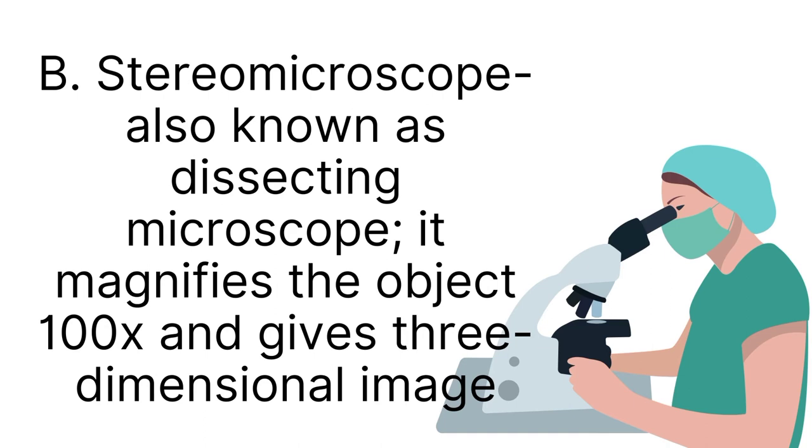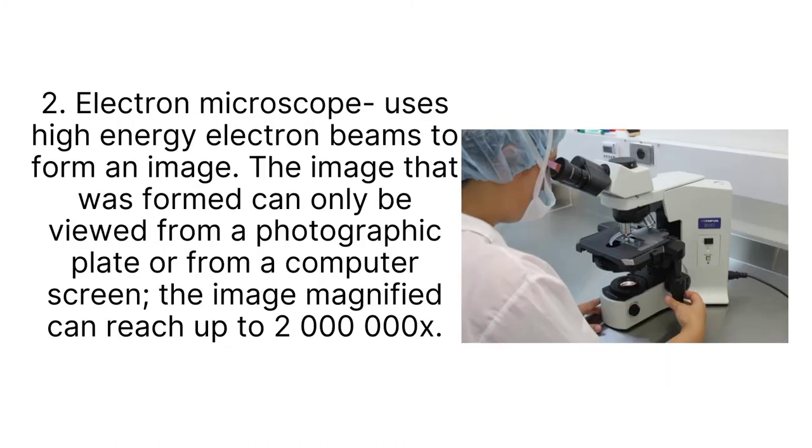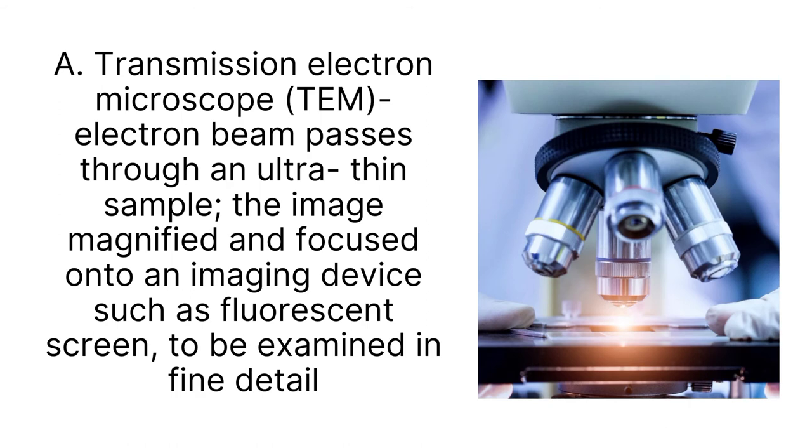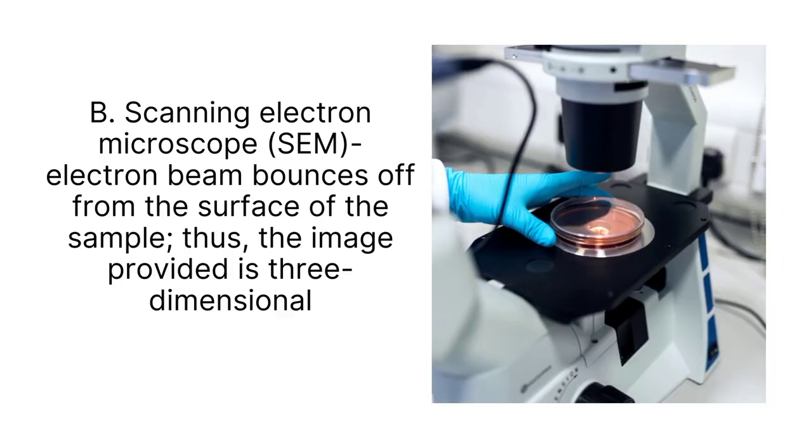Electron microscope uses high-energy electron beams to form an image. The image that was formed can only be viewed from a photographic plate or form of computer screen. The image magnified can reach up to 2 million times. There are two classifications of electron microscope. First is transmission electron microscope. The beam passes through the ultra-thin sample. The image magnified and focused into an image device such as fluorescent screen to examine in fine detail. Second, scanning electron microscope. The beam bounces off from the surface of the sample. Thus, the image provided is three-dimensional.